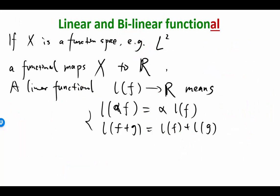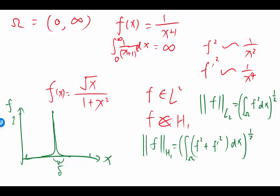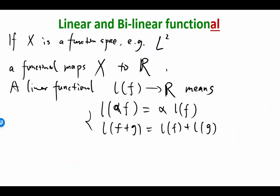Which criterion does it not satisfy? It actually satisfies the first one if alpha is positive, but if you take alpha to be minus one, it doesn't satisfy that. And the second one it obviously doesn't satisfy — if you take f and g equal to minus f, both norms are positive, but the norm of the summation is the norm of zero, which equals zero. So the norm is a functional but not a linear functional.